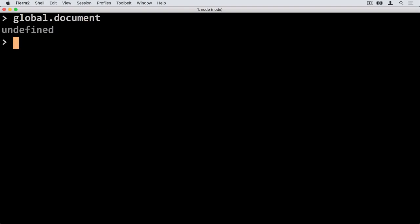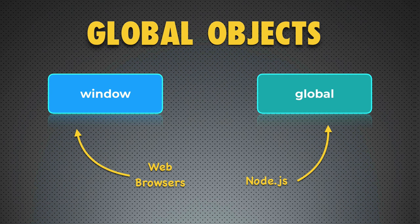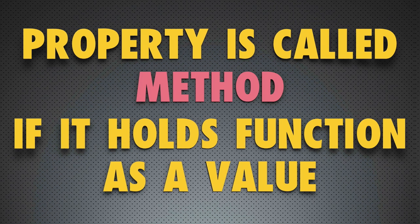Let's summarize. In this lecture we talked about global objects: in a web browser the global object is Window, and in Node.js it is global. These objects contain many different properties — for example, one of the properties is console, which contains a nested object, and that nested object contains functions such as log. That's why we can use console.log directly in the browser console or in Node.js. When a specific property of an object holds a function as a value, that property is called a method. We'll talk about that next.